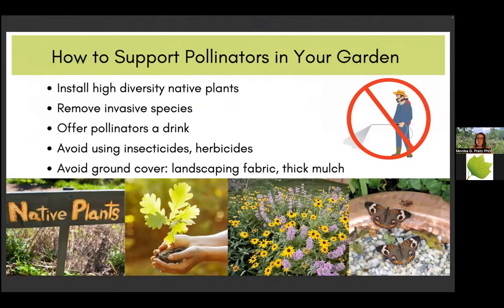Just a few words about how to support pollinators in your garden. Number one — install high diversity native plants and remove all invasive species. It is always good to offer pollinators a drink — a birdbath is a perfect location, a rain garden even better, or a little pond. Always avoid using insecticides and herbicides. And avoid ground cover — landscaping fabrics and thick mulching will disturb bees. They will not be able to find habitat. Remember, 70% of our native bees are ground-nesting bees.